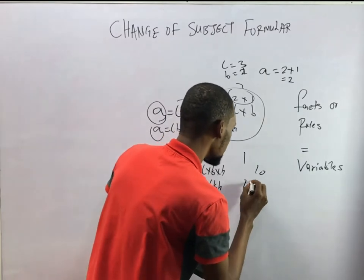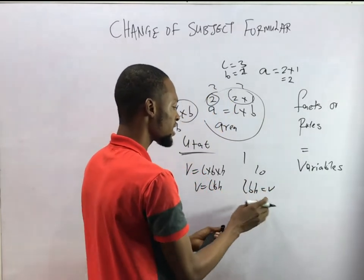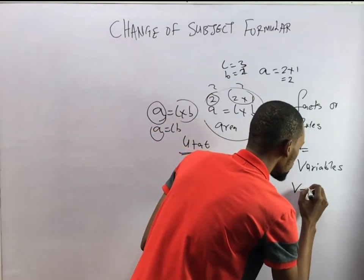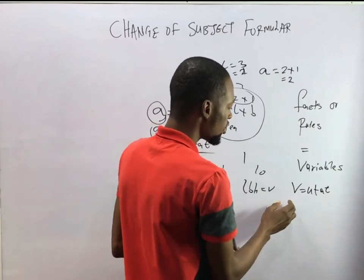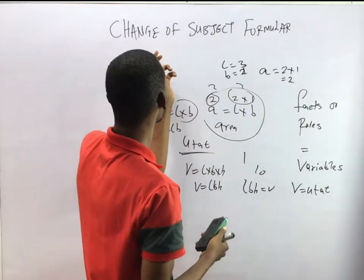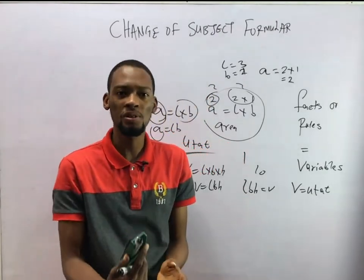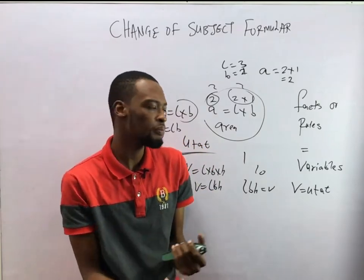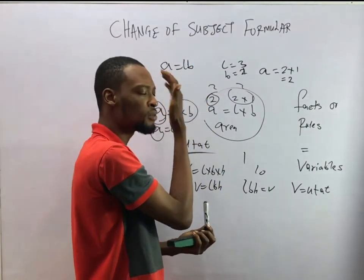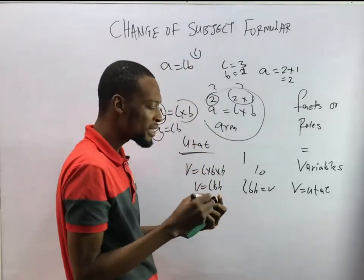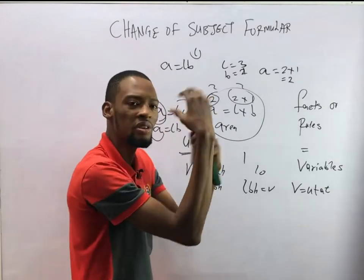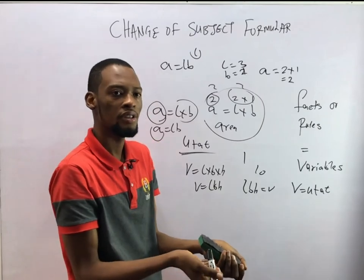The subject can also be on the right — LBH equals V is the same as V equals LBH. So the subject formula is that single variable that every other thing is equal to. Now, what is change of subject formula? Change of subject formula is an operation which requires us to change the subject of the formula. For example, in A equals LB, area is the subject formula, but we may be asked to change the subject to L — we want to make L the subject formula, meaning L must stand alone and equal everything else.